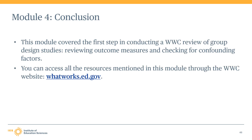This concludes the fourth module in the WWC group design standards training. We reviewed the definition of an outcome measure and learned why the WWC assesses outcome measures used to demonstrate impacts in evaluations. We also reviewed how to describe and apply the four WWC outcome measure standards, the WWC's definition of a confounding factor, and examples of confounding factors as well as things that are not confounding factors. These resources are available on the WWC website at whatworks.ed.gov.